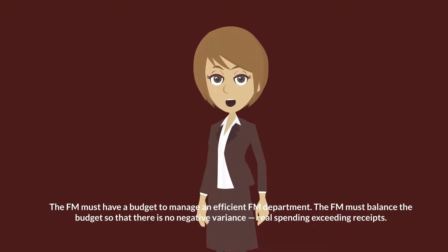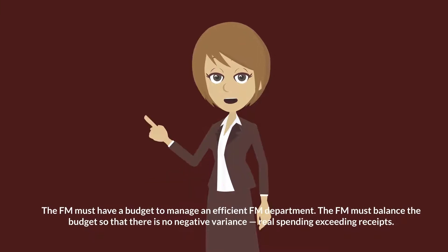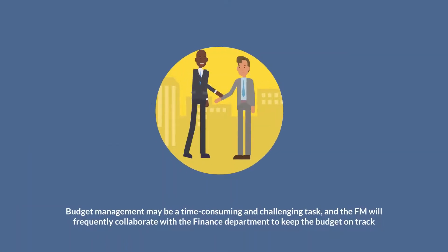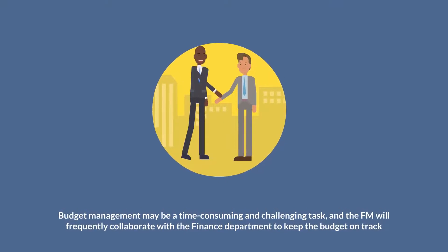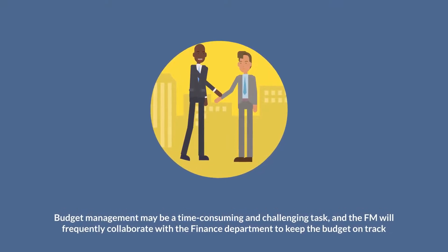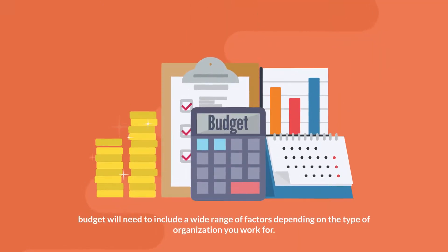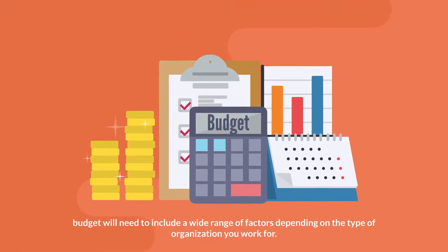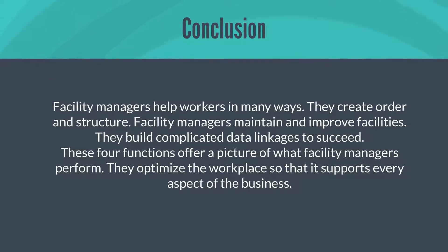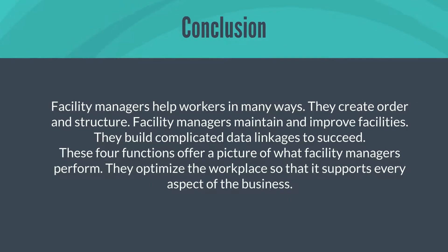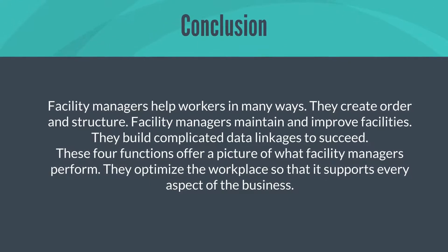Six: management of budgets. The FM must have a budget to manage an efficient FM department and must balance it so that there is no negative variance — real spending exceeding receipts. Budget management may be time-consuming and challenging, and the FM will frequently collaborate with the finance department to keep the budget on track, accounting for a wide range of factors depending on the type of organization.